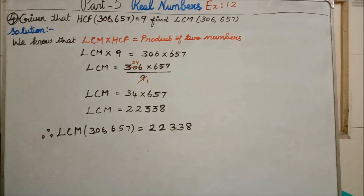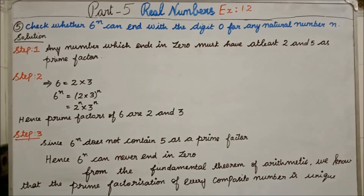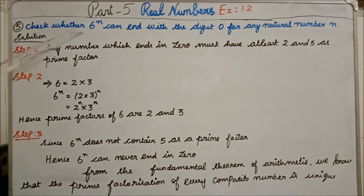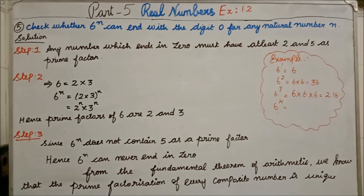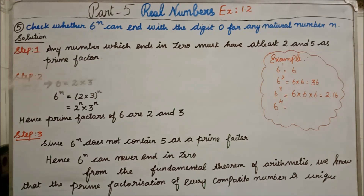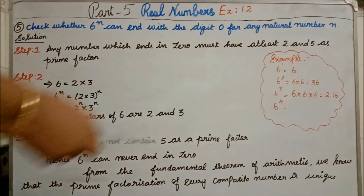Now we will see the fifth question. Check whether 6^N can end with the digit 0 for any natural number N. What we are asked: check whether 6^N can end with digit 0 for any natural number N. For any natural number N means you can substitute any value: 1, 2, 3, 4, 5, 6, and so on. If you see the example, you will be clear.